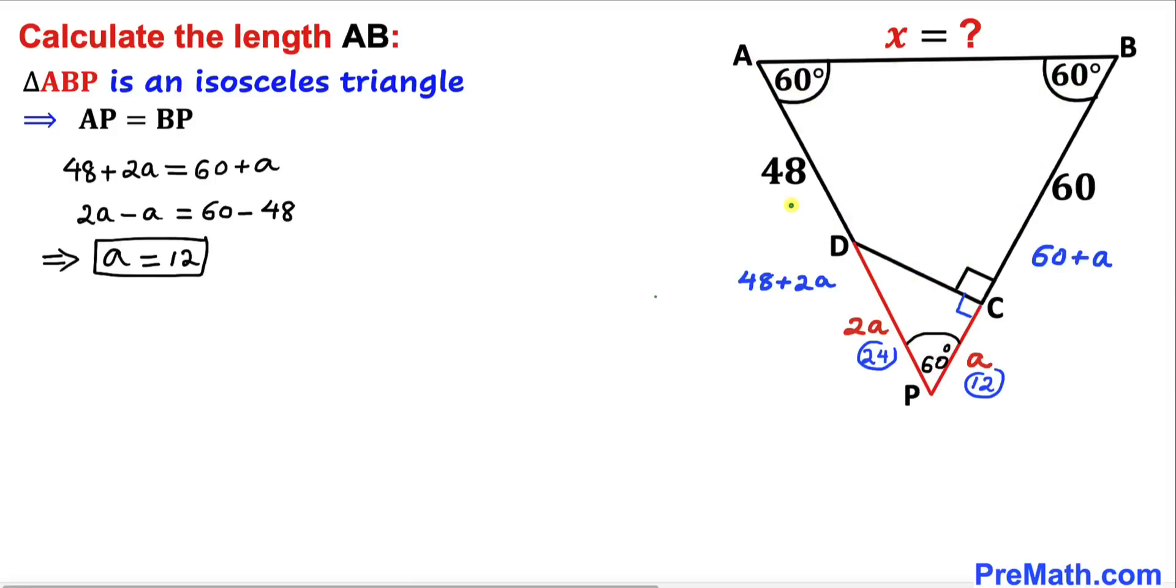length AP is 48 + 24 = 72 units. Likewise, BP is 60 + 12 = 72 units as well. Here's our final step.